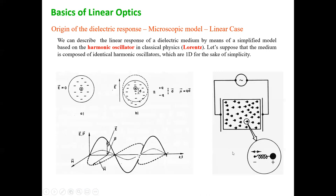Why do we make this approximation? Because in reality we know that there are atoms or molecules, and in general an atom is a neutral system in which you have as many electrons as protons. The electrons are distributed uniformly around the atom — you have a positive charge at the center and a negative charge around it, with the center of the negative charges coinciding with the positive charge, so you have a neutral system with no dipole moment. But if you apply an electric field, this field will displace the negative charges.